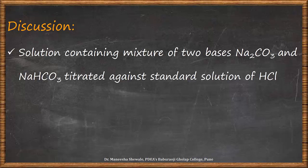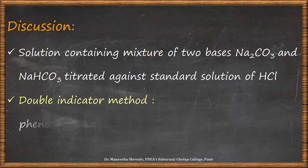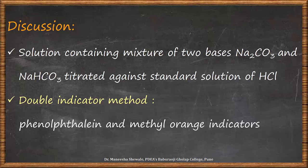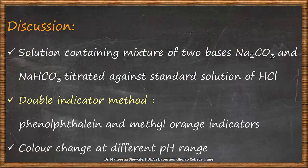To detect the end point, we need to add some indicator. This method is a double indicator method where we add two indicators: one is phenolphthalein and the other one is methyl orange. These two indicators show colour change at different pH ranges. We will first have a look at the reactions which take place between the two bases and HCl.